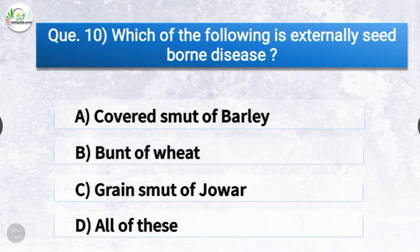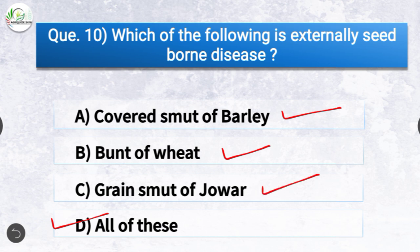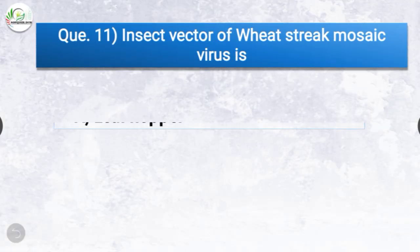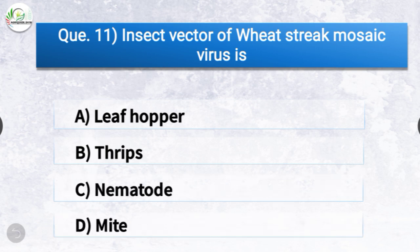Question number ten: Which of the following is an externally seed-borne disease? The options are covered smut of barley, bunt of wheat, grain smut of jowar, or all of these. The correct answer is option D, all of these. Covered smut of barley, bunt of wheat, and grain smut of jowar are all externally seed-borne diseases.